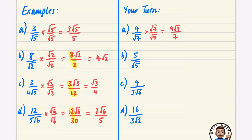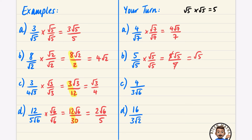This one is interesting — see if you can guess the answer before rationalizing. You have five divided by root five. Multiplying by root five over root five gives five root five over five, and the fives cancel, leaving just root five. This makes logical sense: root five times root five equals five, so five divided by root five must equal root five. Whenever you divide a number by its own square root, you just get the square root.